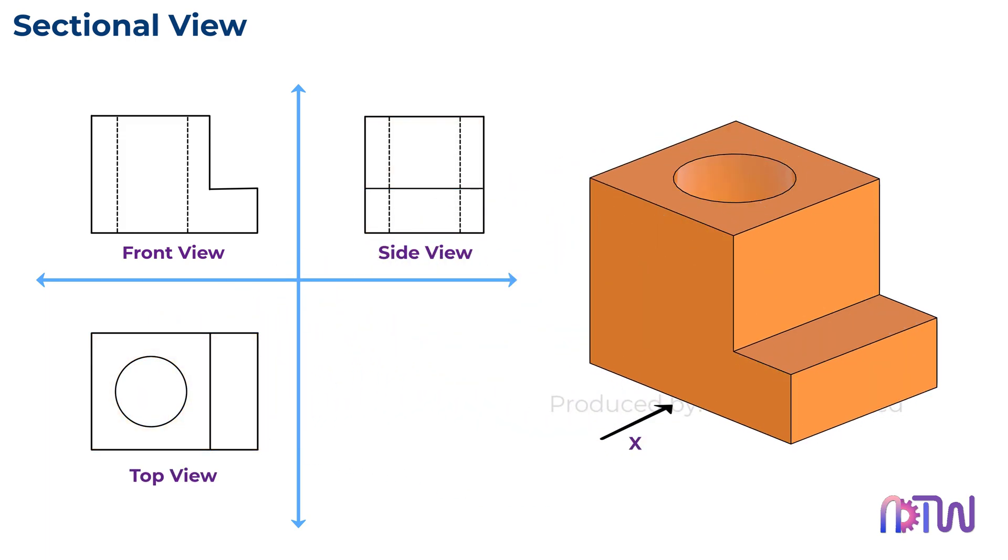However, for sectional views, we imagine a plane cutting through the object. This cutting plane can be horizontal, vertical, or inclined, and it can pass through the object at any point.